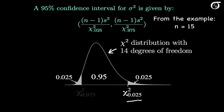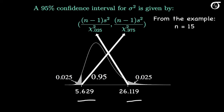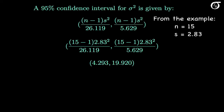Chi-square 0.975 is the value that has an area to the right of 0.975, and therefore an area to the left of 0.025, and that's going to be here in the left tail. We can find these values using software or a chi-square table. From software or a table, the value with an area to the right of 0.025 is 26.119, and the value with an area to the left of 0.025 is 5.629. You should use as many decimal places as possible throughout the calculations. We then substitute these values into the formula, along with the sample size of 15 and the standard deviation of 2.83, and carry out the calculations.